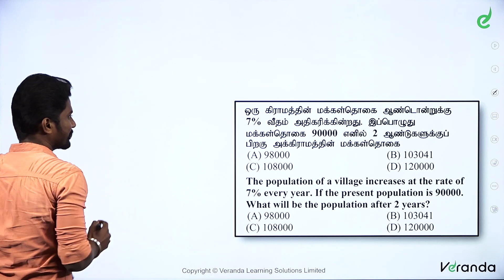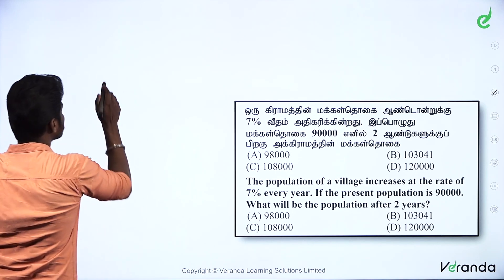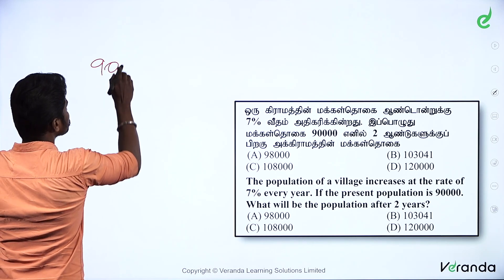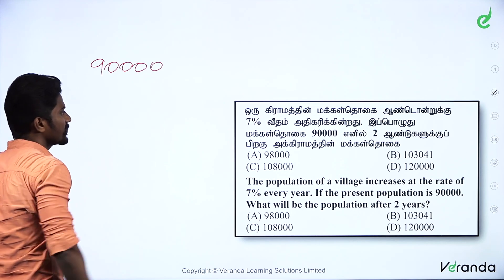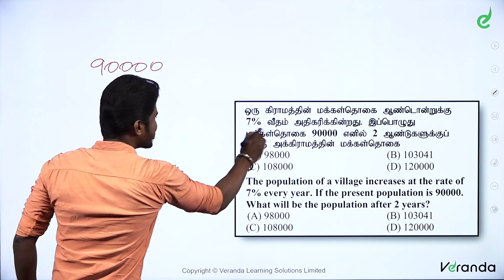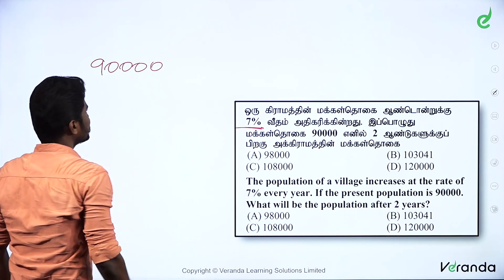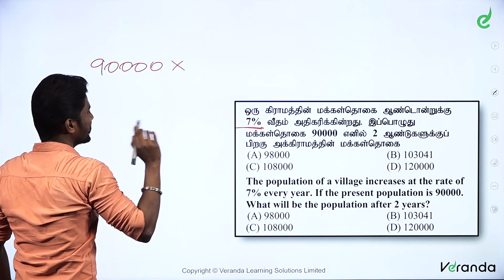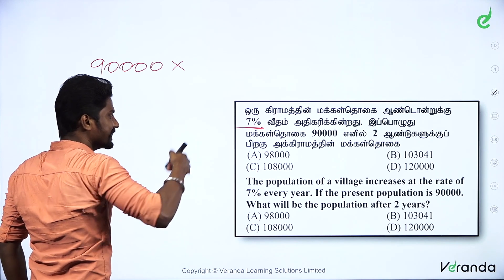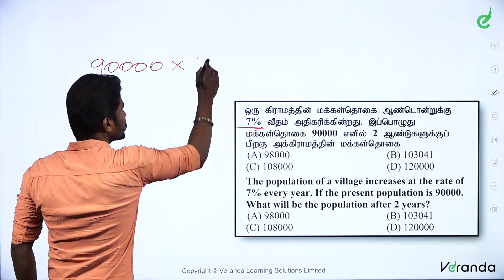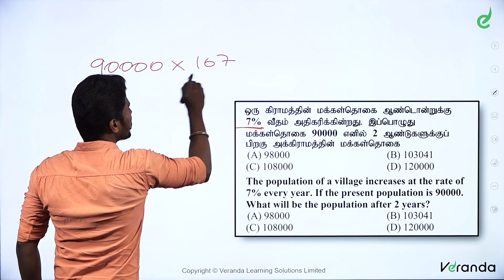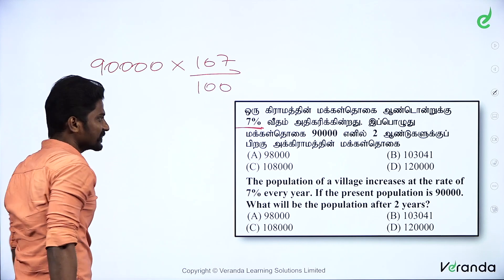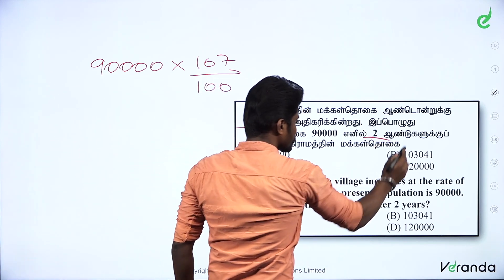If you want to approach this technique: 90,000. With 7% increase, that becomes 107 divided by 100, raised to the power of 2 years.